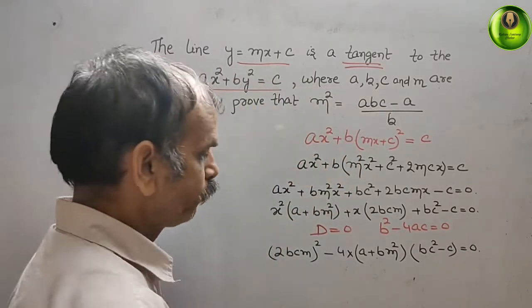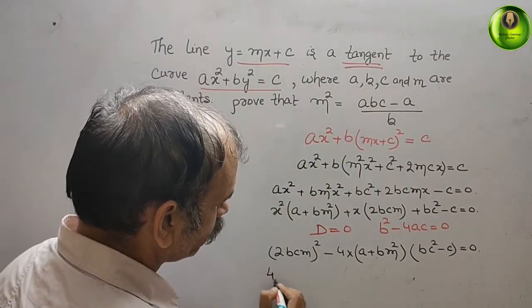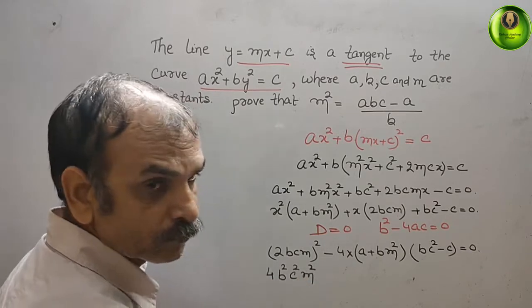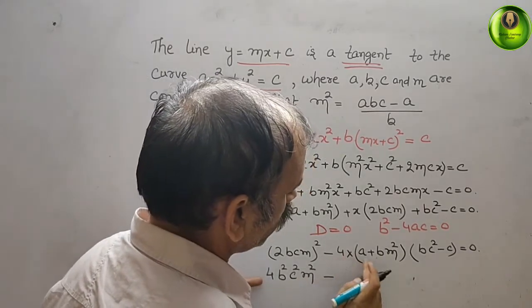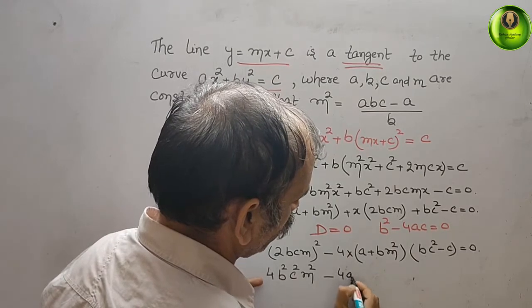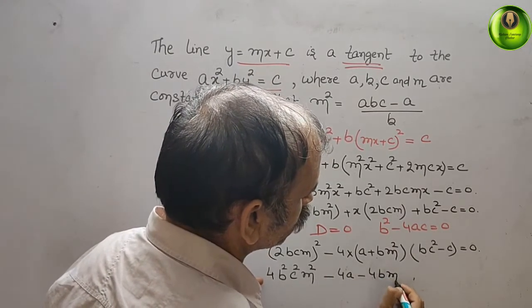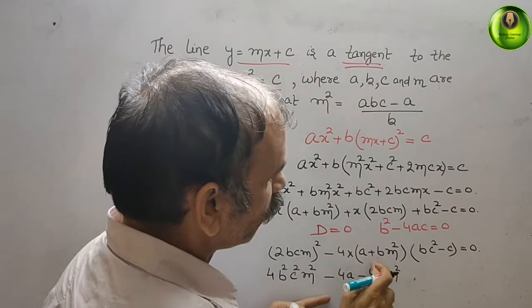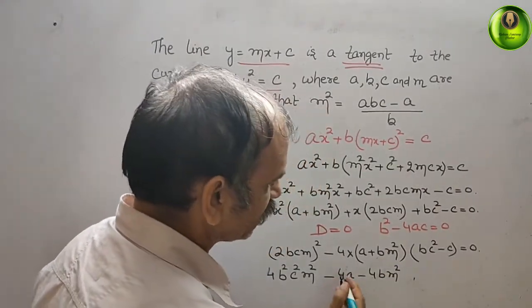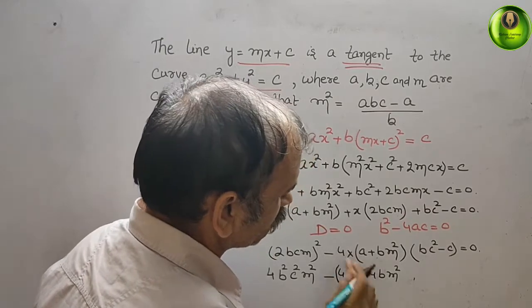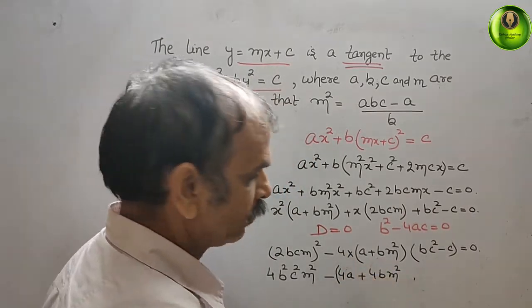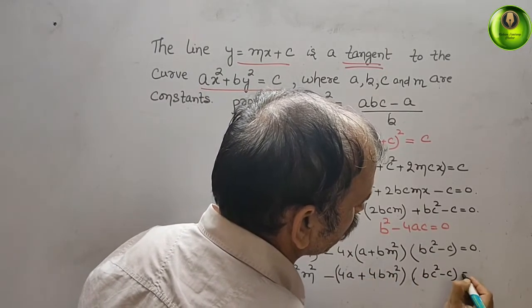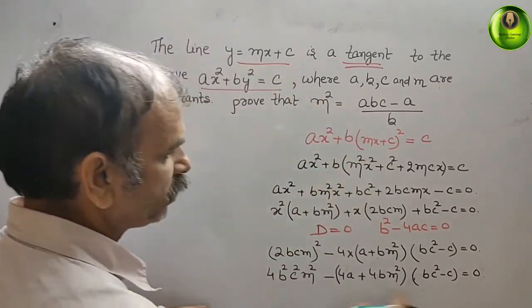Expanding, we get 4b²c²m² minus 4 times (a + bm²) times (bc² - c) = 0. We first expand (a + bm²)(bc² - c) with a positive sign for the first bracket and then handle the sign change.